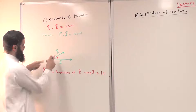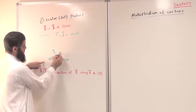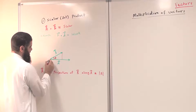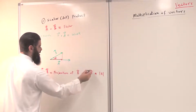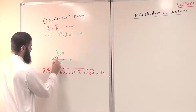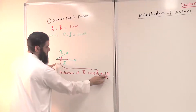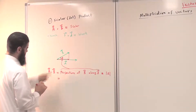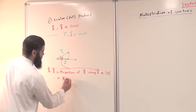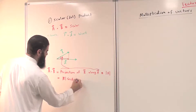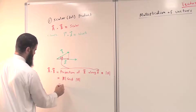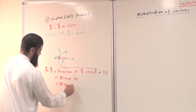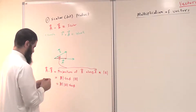To find this projection, we draw from the head of B a line perpendicular to the direction of A. This gives the projection of B along A. From trigonometry, this projection is B magnitude times cosine phi. So A dot B equals the magnitude of B times the magnitude of A times cosine of the angle phi between the two vectors.